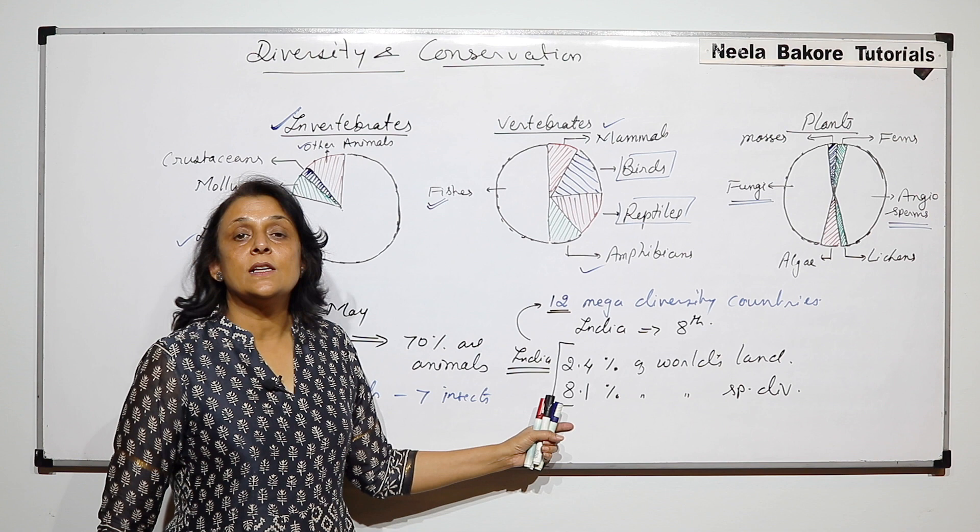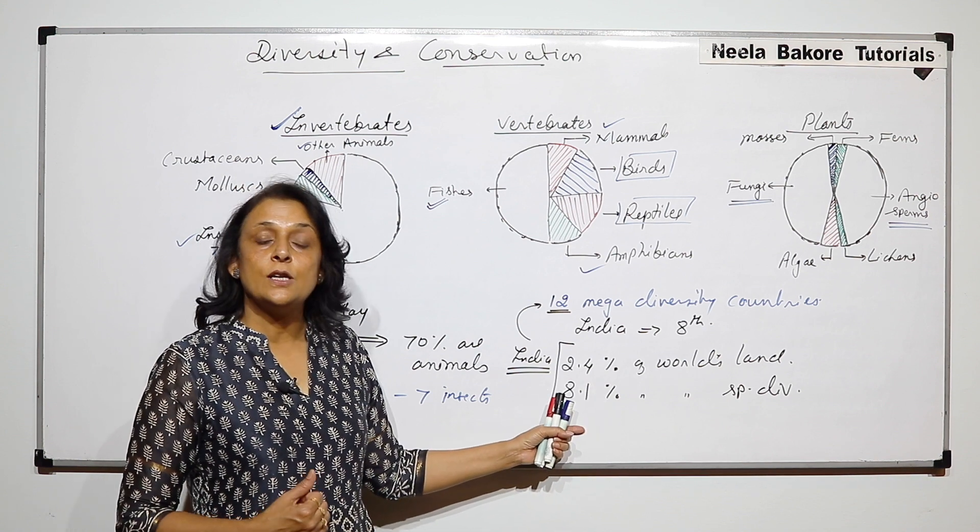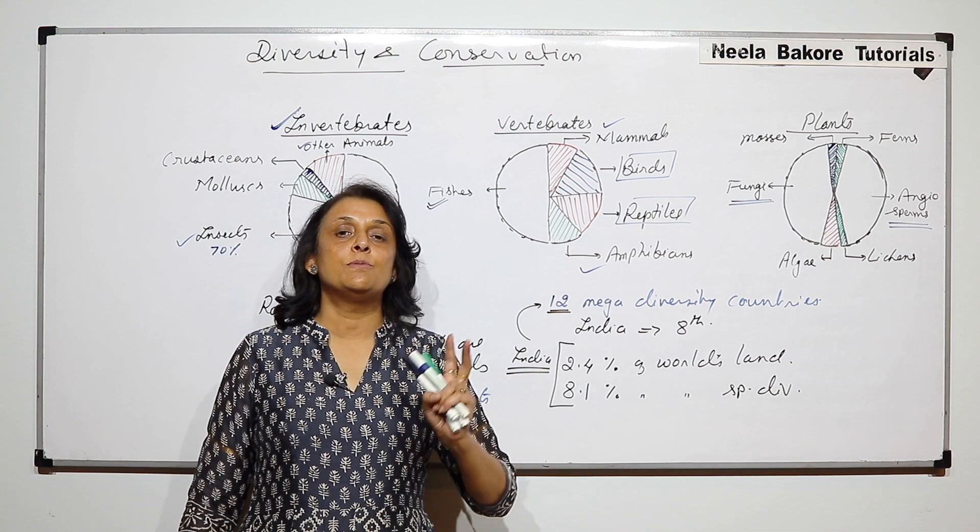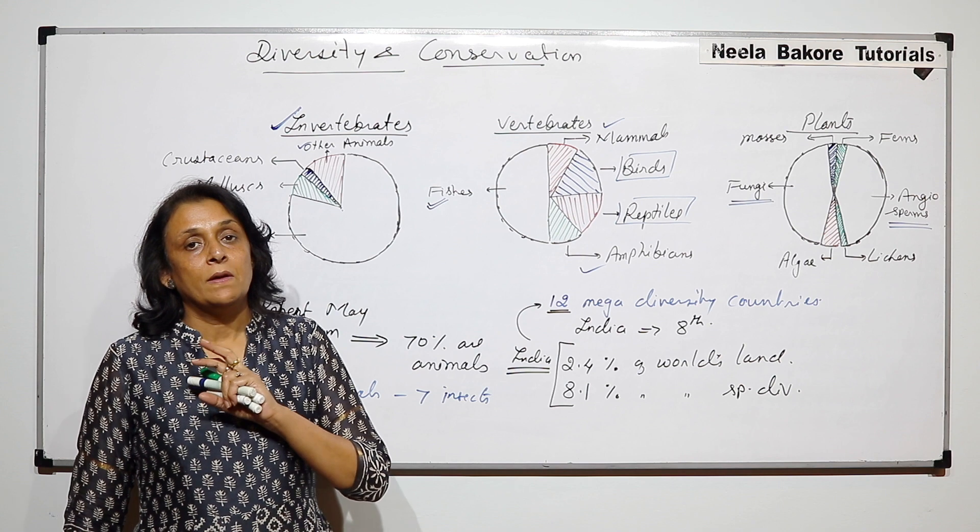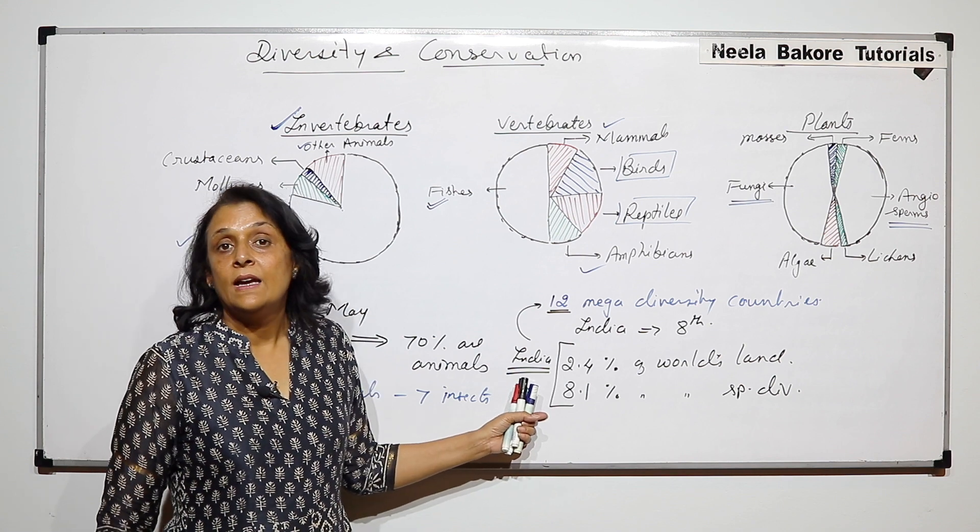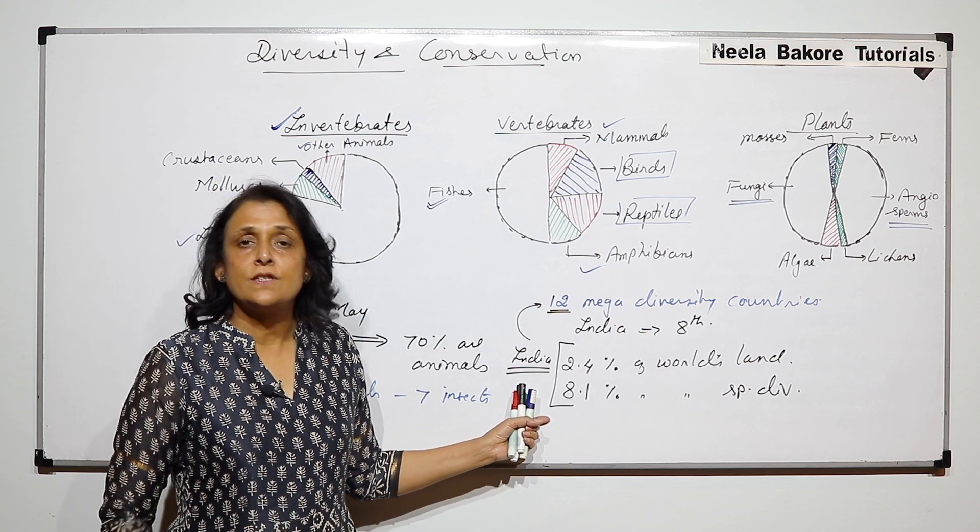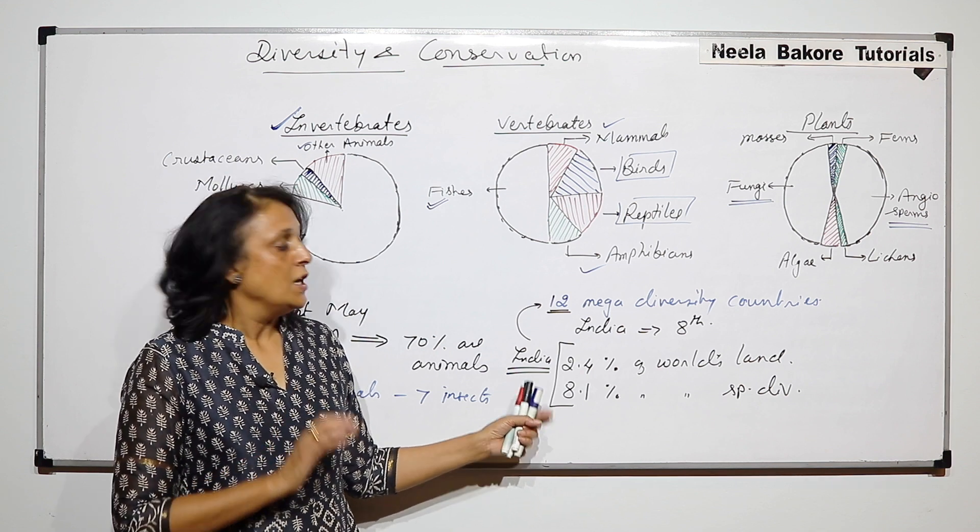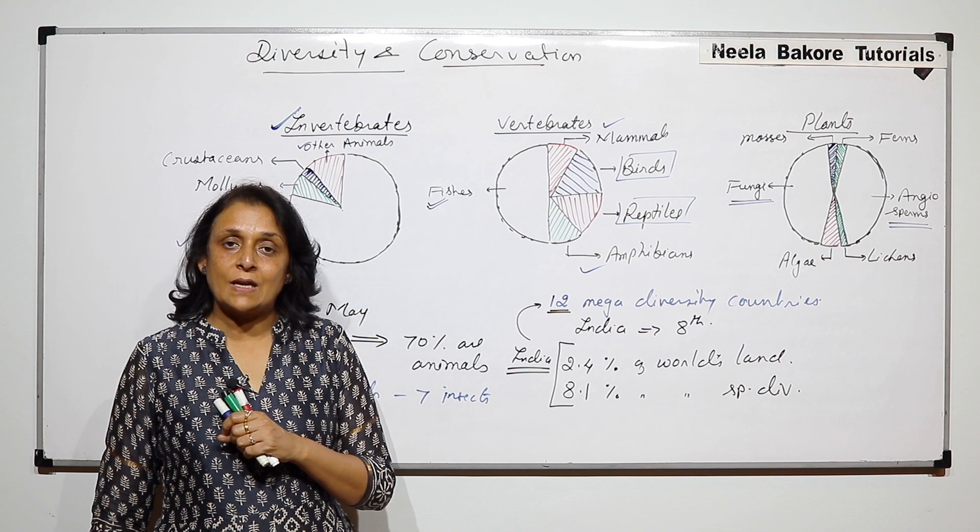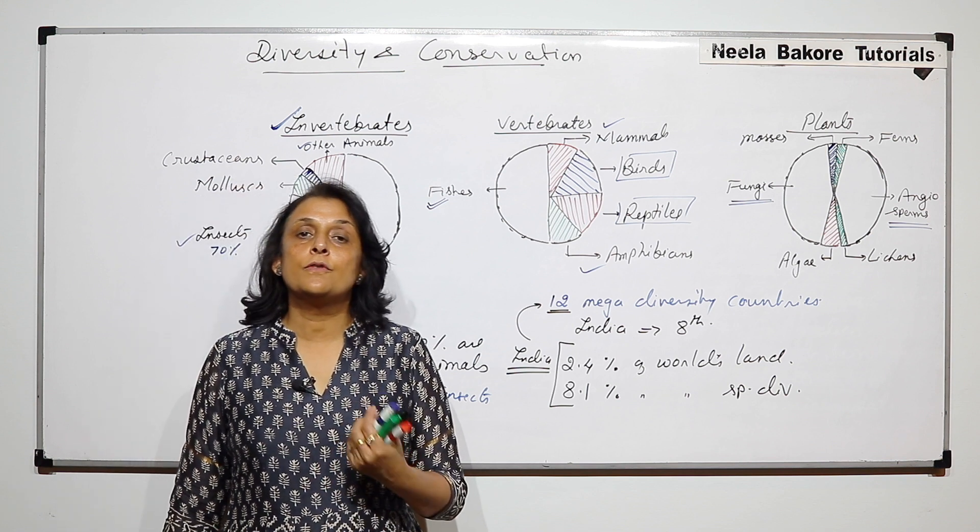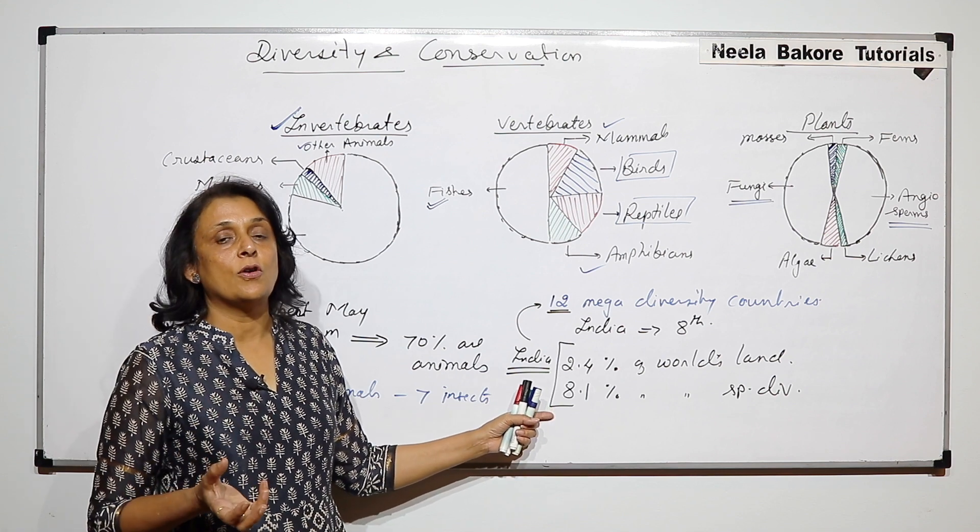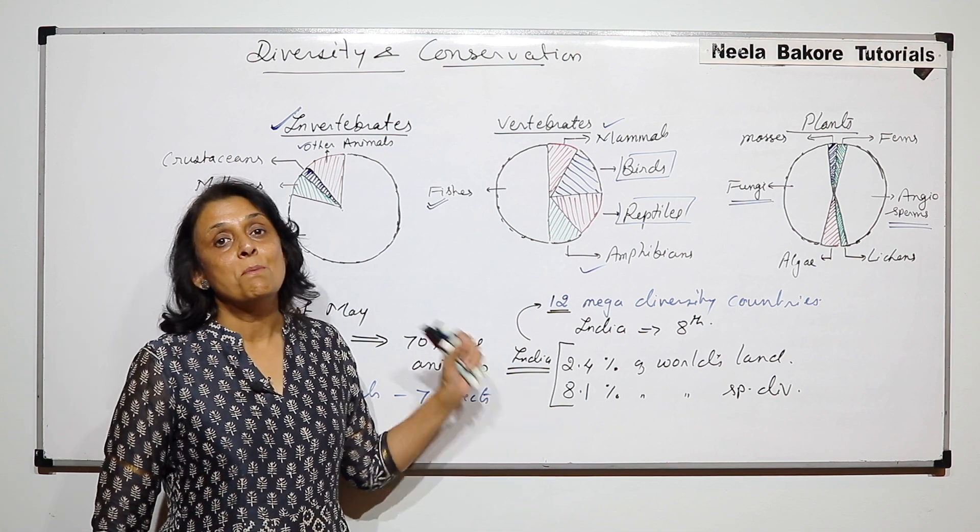The reason for such a high percentage of species diversity is because in India we have various types of ecosystem. There are water bodies, fresh water bodies, oceans, then grasslands, various types of forests, various types of deserts. So all these different types of ecosystem have different types of living organisms. The plants are also different, the animals are also different. And that is why the species contribution of India is much higher.